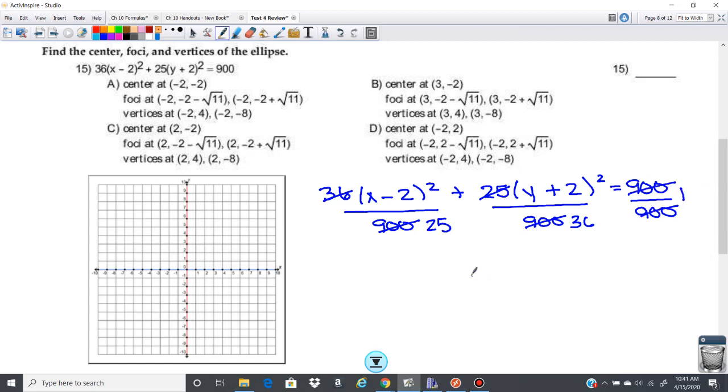All right, so the center, let's go ahead and get the center. So this is x minus h, so my center is going to be 2, positive 2. And then y minus k, the minus turned into a plus, so that is a negative 2. So my center is at (2, -2). Let me go ahead and plot that. 2, negative 2 right here.